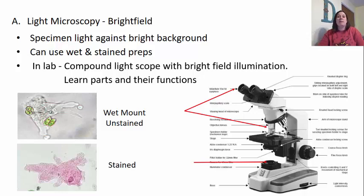You would do 10 times whatever number is found on the objective you're using on the nosepiece. So if the objective is 4, you do 4 times 10 to equal 40 times magnification. If it was 100 times on the objective, you would do 100 times 10, which means it magnifies the object 1,000 times. That's how you see how much you're actually magnifying what you're looking at.